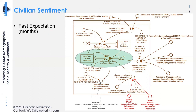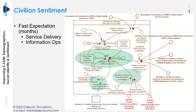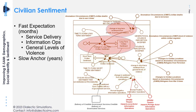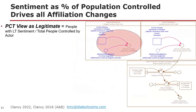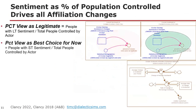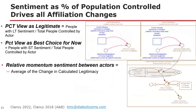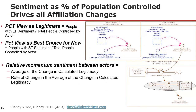Here is the structure from our model. The short-term fast expectation — civilian sentiment — forms in months. It deals with delivery of services: am I getting services from the government? What's the sentiment change from information operations? You can plug in an approximation of information, disinformation, and misinformation. And general levels of violence. The slow anchor is measured in years and reflects direct violence against the population. From this, you can calculate legitimacy and best choice for now, and begin to calculate relative momentum of sentiment between actors.